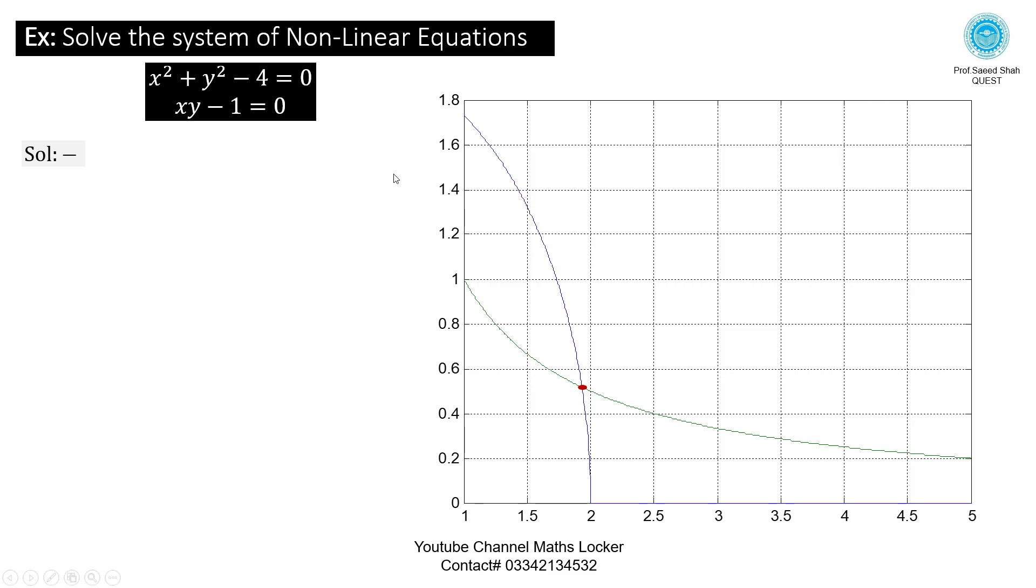By white flag, here is a point of contact which is for the required solution. Draw the normal on X axis. That is the foot of the normal near to 2, so initial guess X0 is equal to 2. Draw the normal on Y axis between 0.4 and 0.6, which is lying between the integer values 0 and 1. So initial guess Y0 is equal to 0.